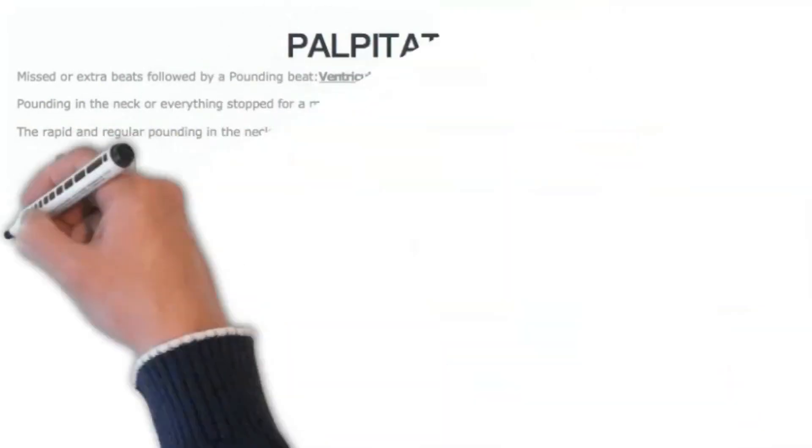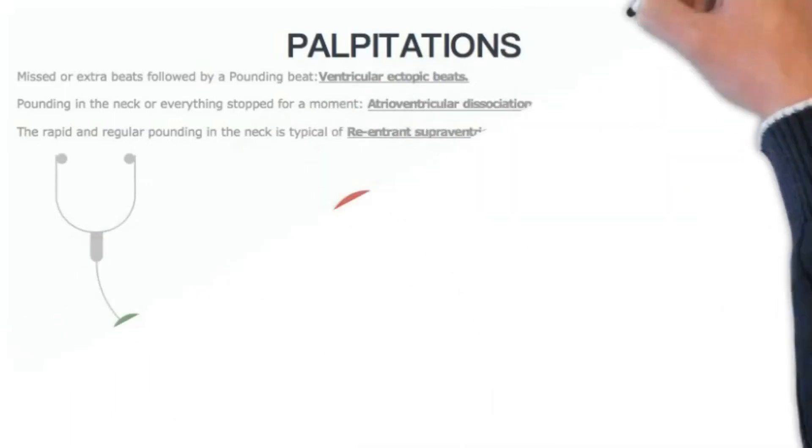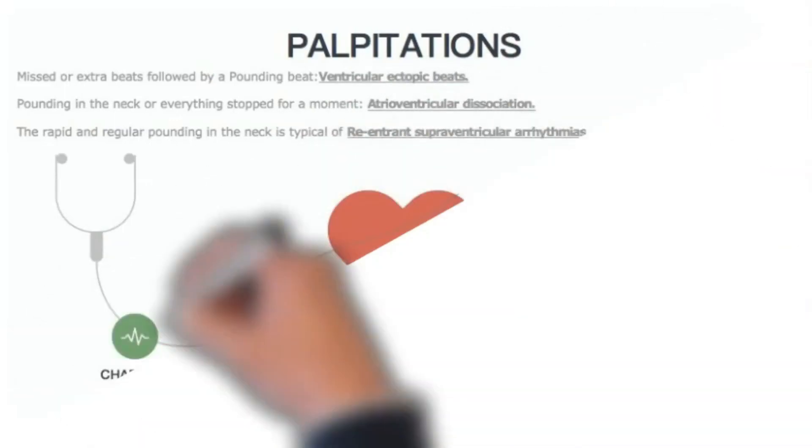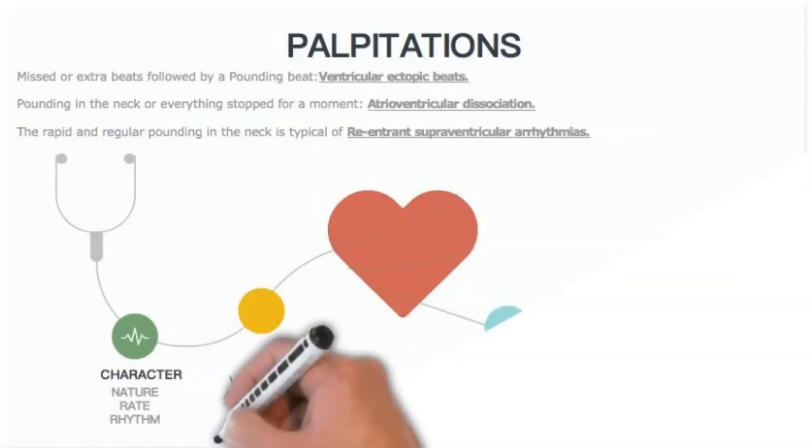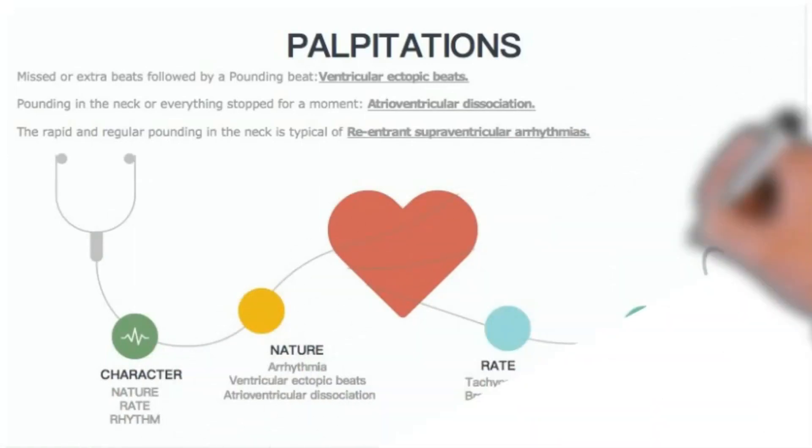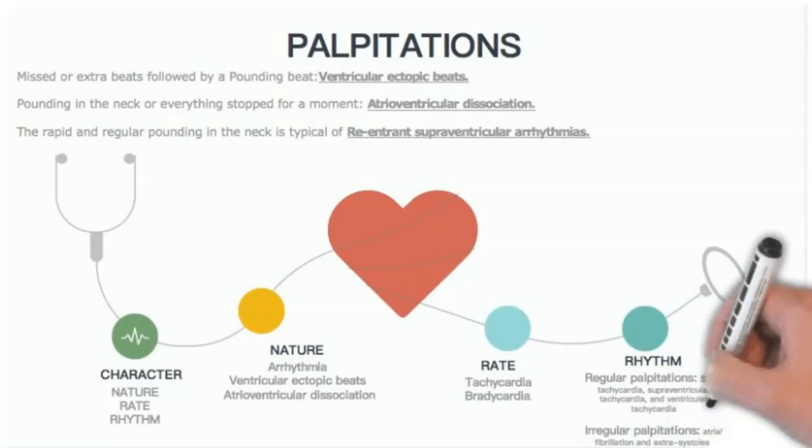Regarding nature of palpitations, ask: what do the palpitations feel like? Remember, racing of heart suggests a fast arrhythmia. Meanwhile, missed or extra beats followed by a pounding beat suggest ventricular ectopic beats. However, pounding in the neck or everything stopped for a moment may indicate atrioventricular dissociation.